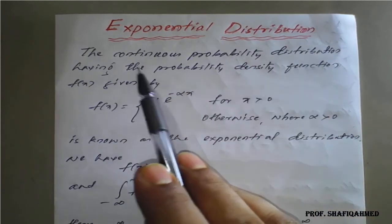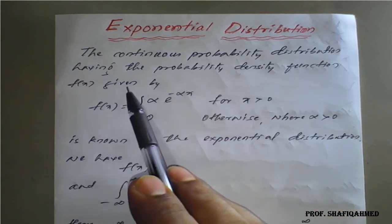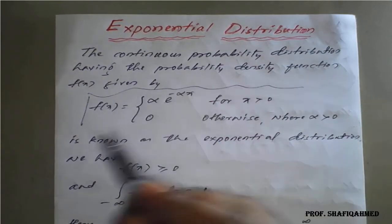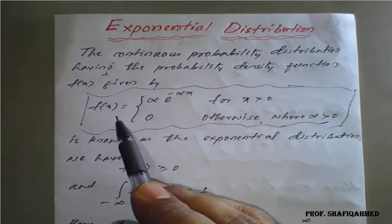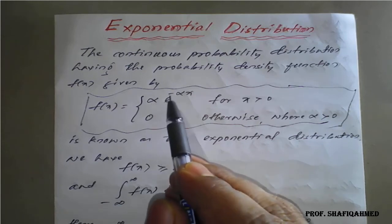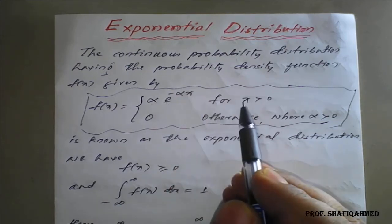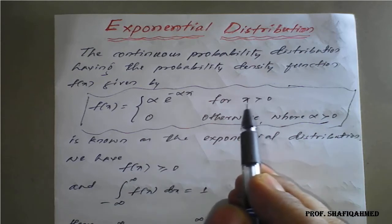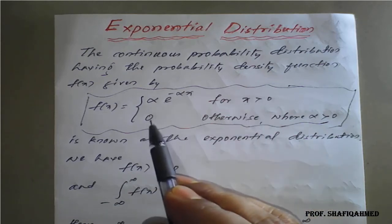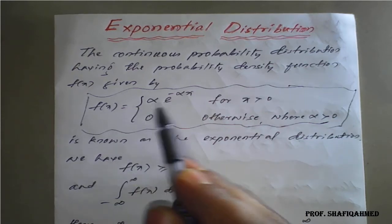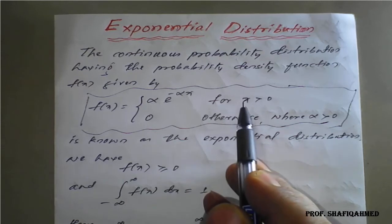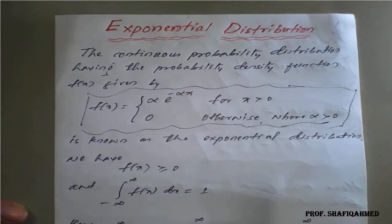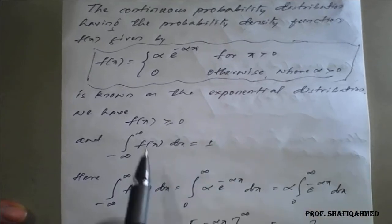The continuous probability distribution has a probability density function f(x) given by f(x) = α·e^(−αx) for x greater than 0 (i.e., x is positive). If x is negative or otherwise, f(x) equals 0. So f(x) = α·e^(−αx) for x > 0 is the expression for the exponential distribution.